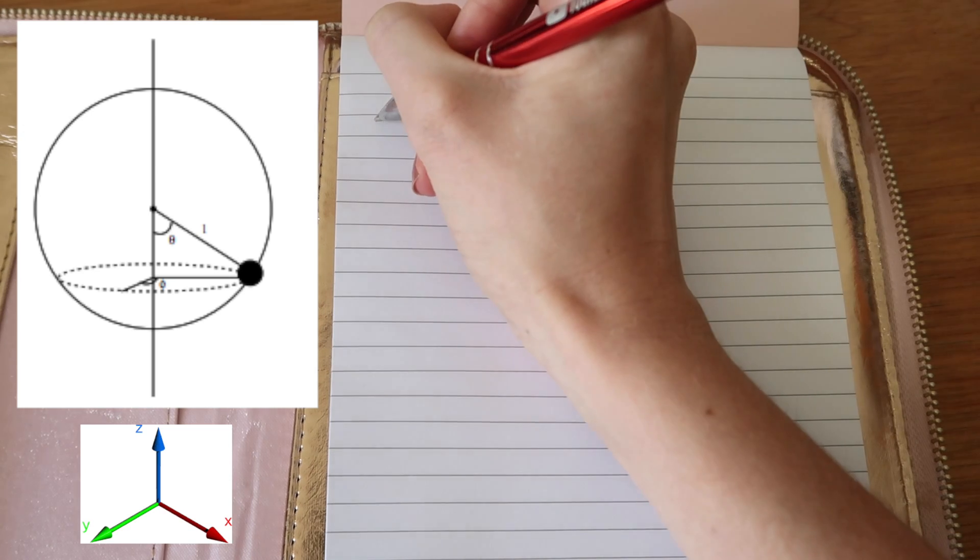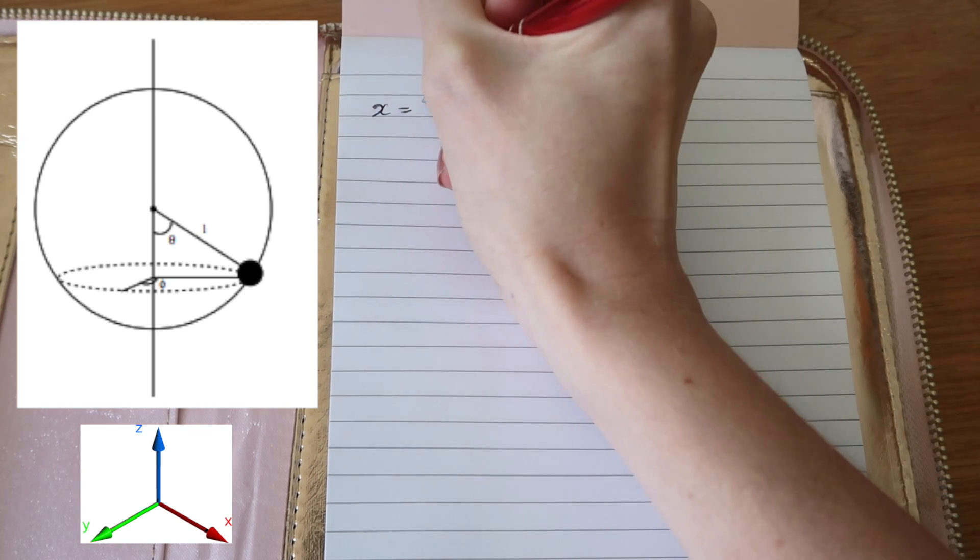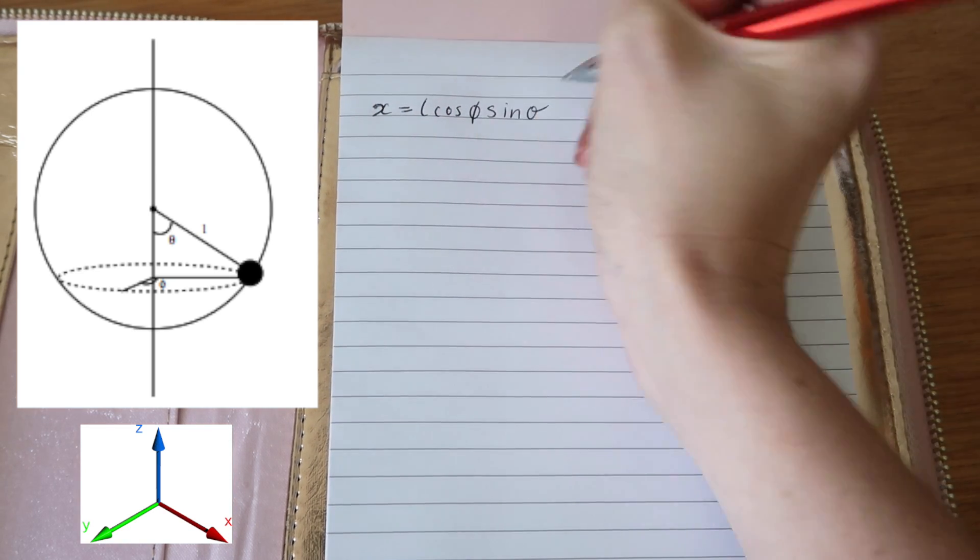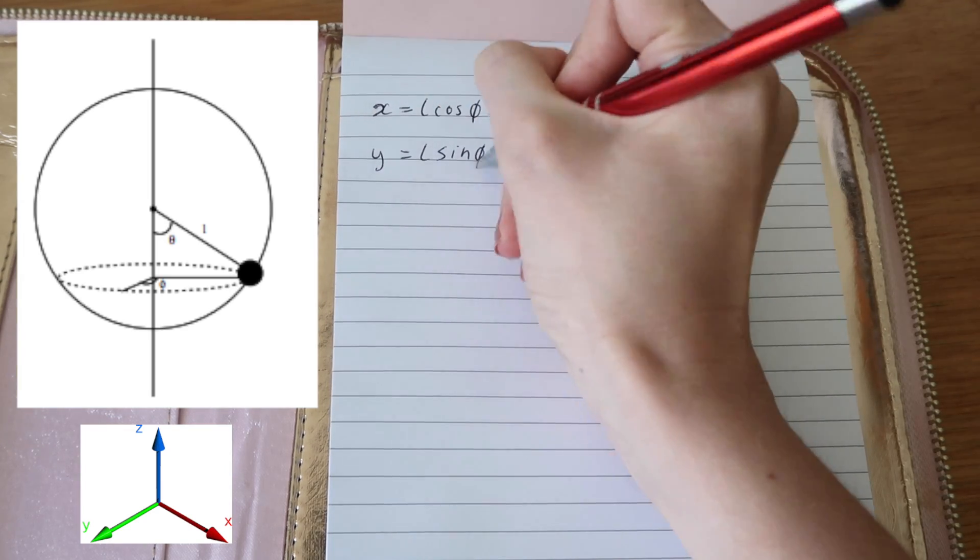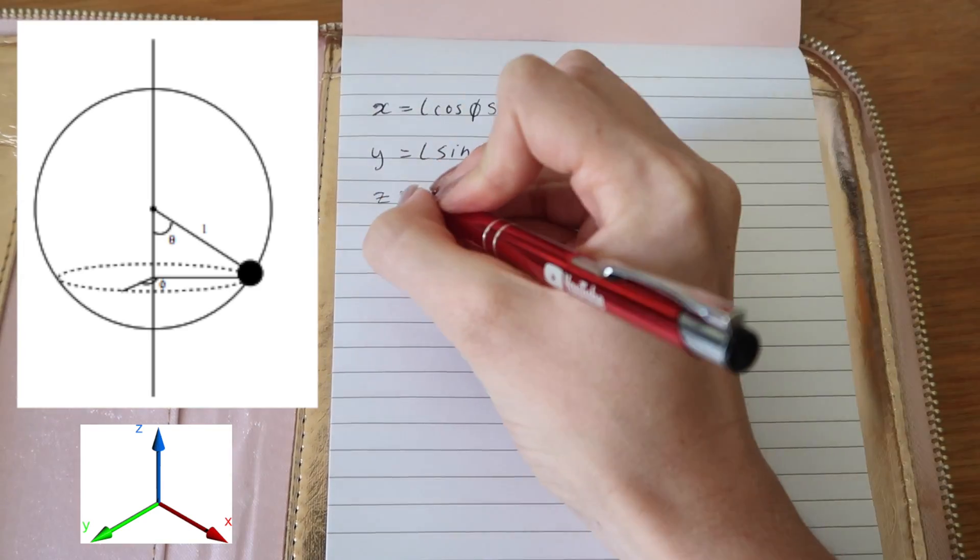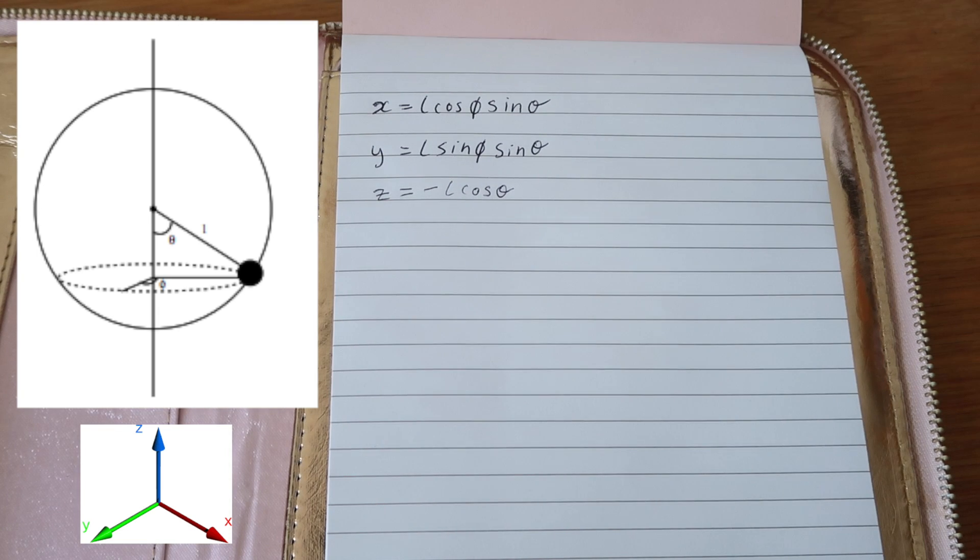Let's say we have a spherical pendulum. Using spherical coordinates we can write the location of the mass using x, y, z as follows, where L is the fixed length of the rod.